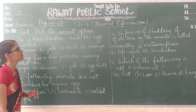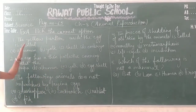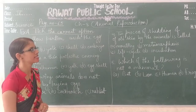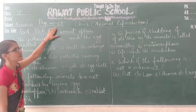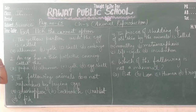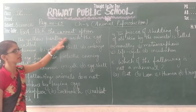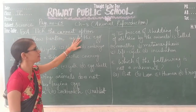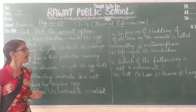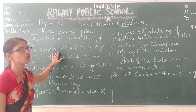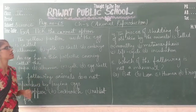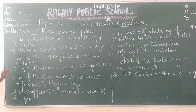Good morning students. Today we will do Exercise A and B of Chapter 8, that is Animal Reproduction. The exercise is given at page number 65 in your book. Exercise A is 'Tick the Correct Option.' In this portion, some questions are given along with 4 options, from which you have to tick the correct answer. So let's start.